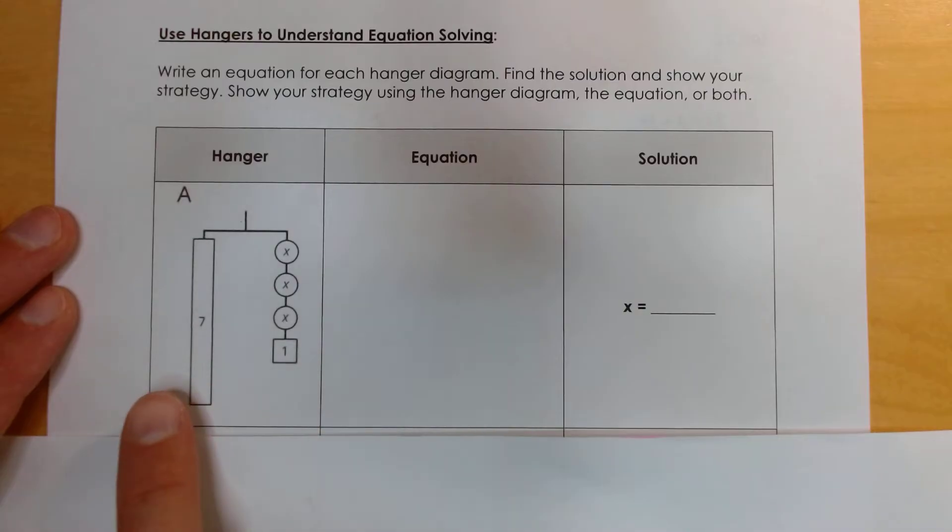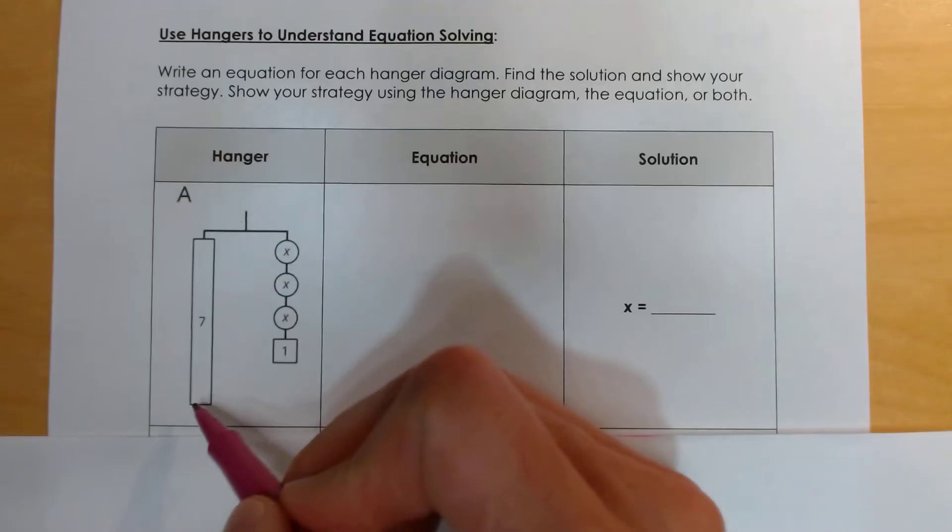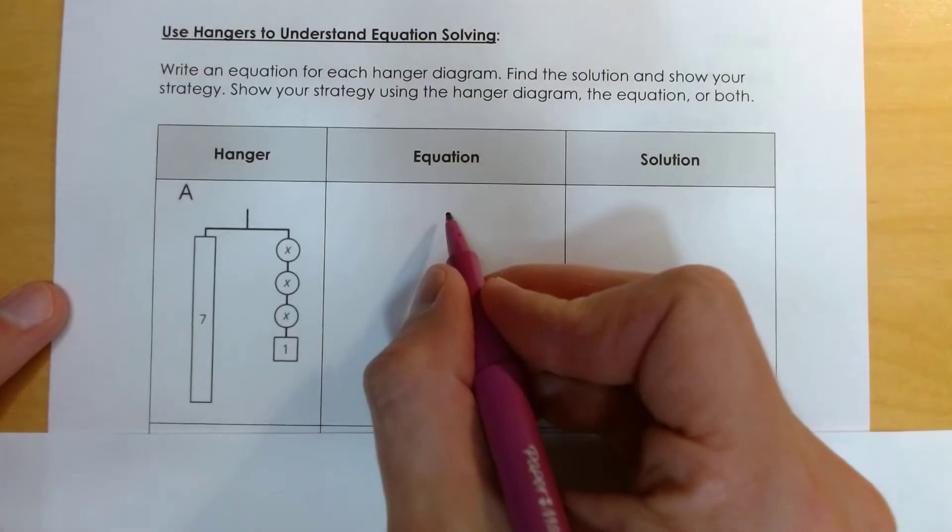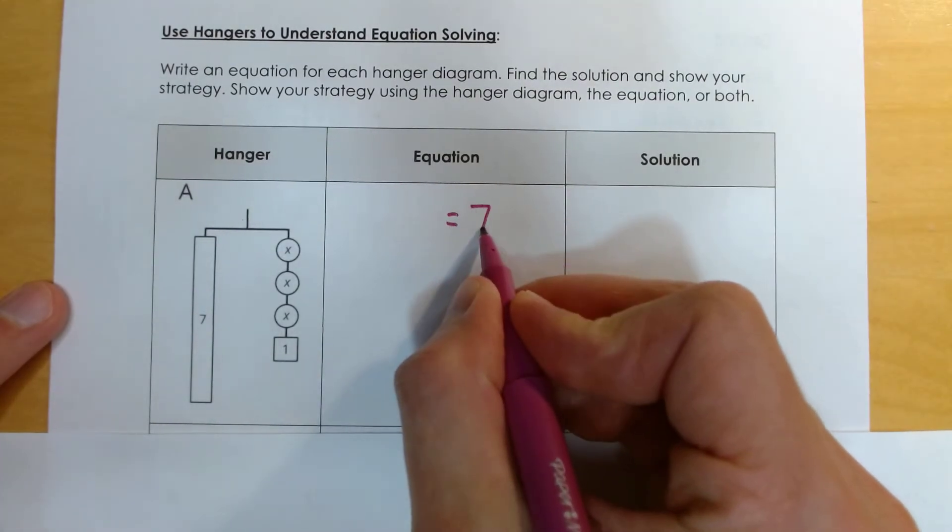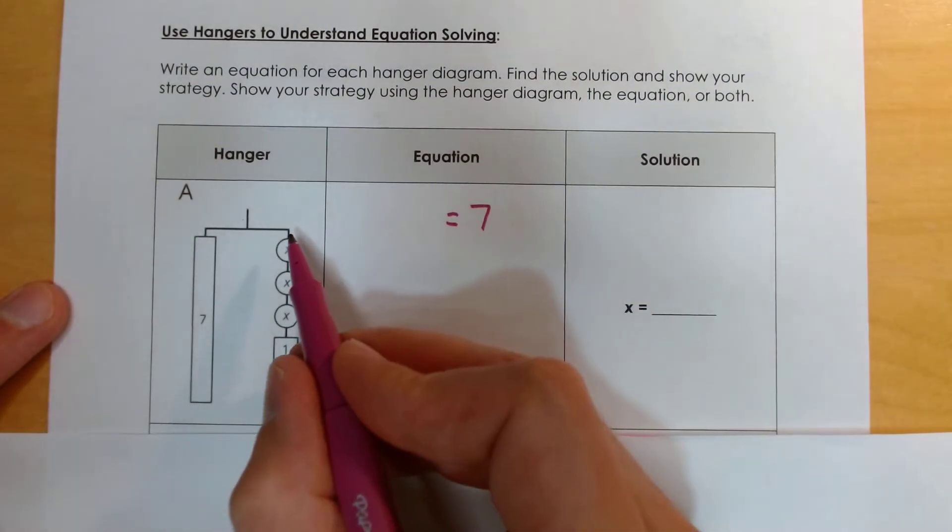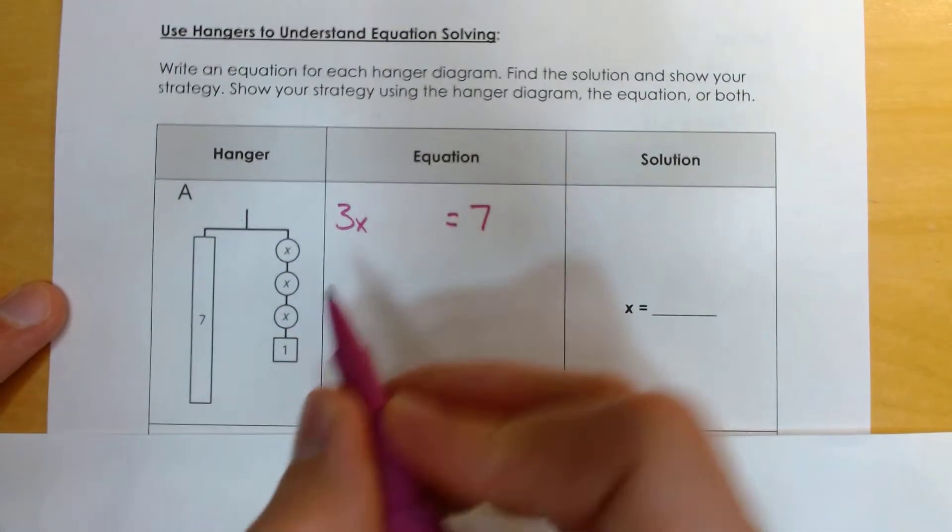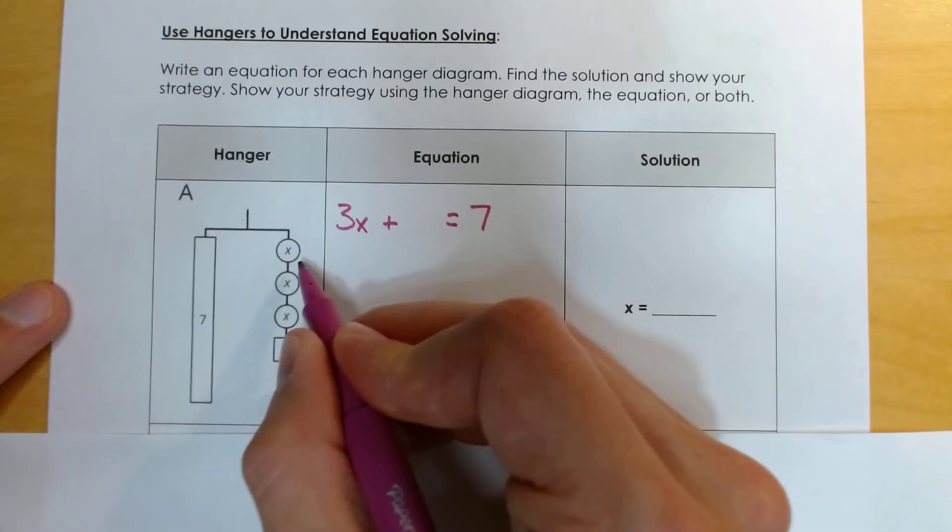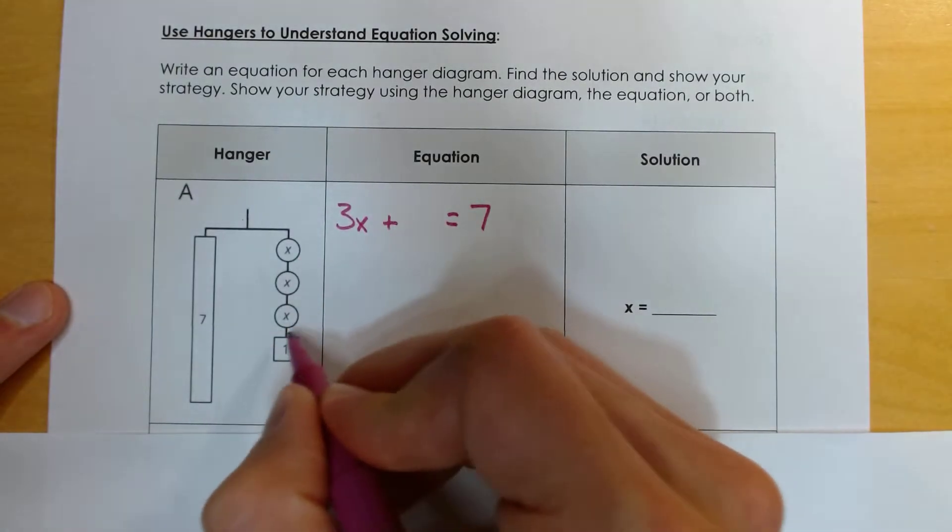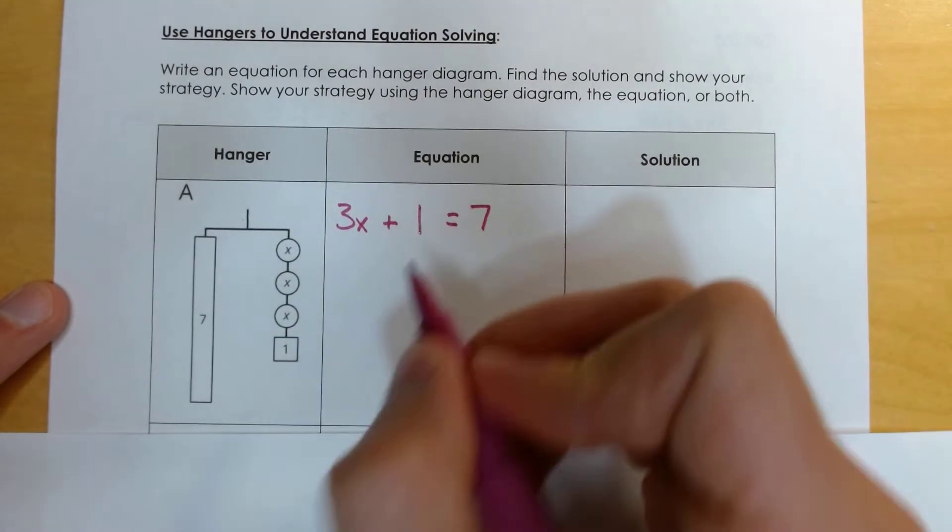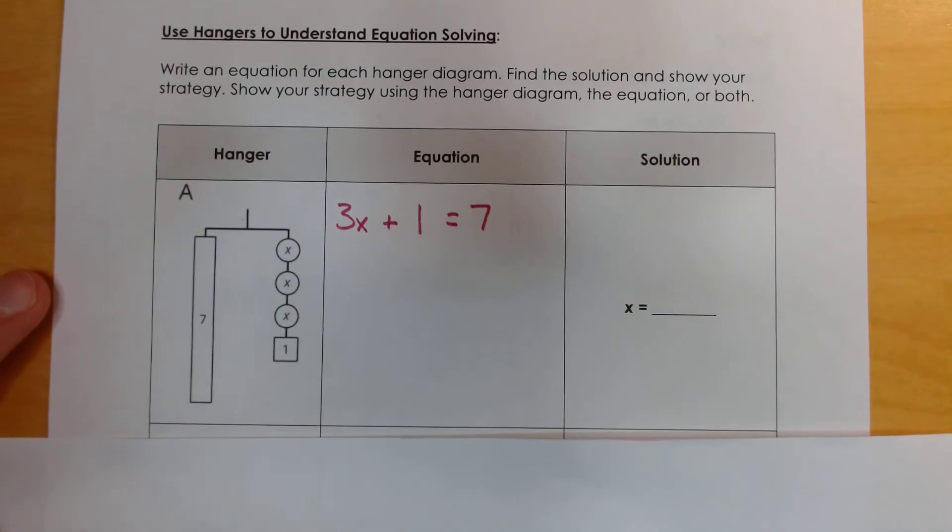So here I have a hanger diagram. Remember, both sides are perfectly balanced, and so what I want to do first is write an equation to represent this situation. So you're going to see I have 7 on one side, so I know in my equation that one side is going to equal 7. Now on the other side, I have 3 x's and a 1. So I write 3x, 1, 2, 3, plus 1 little 1. So here's my equation: 3x plus 1 equals 7.